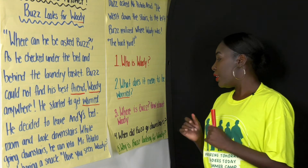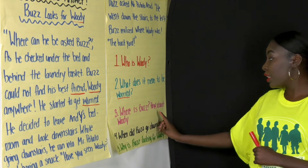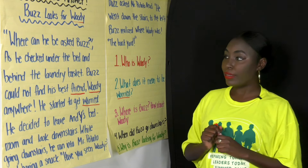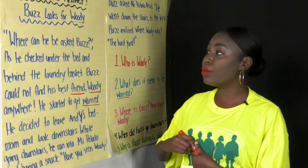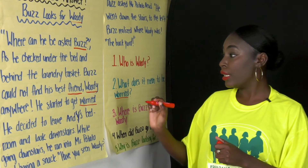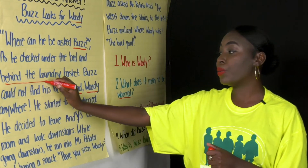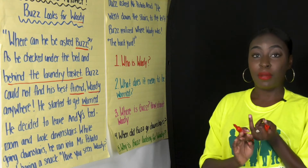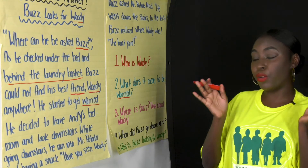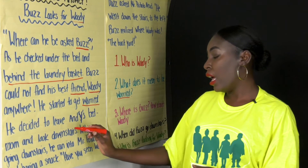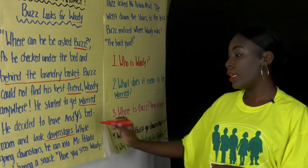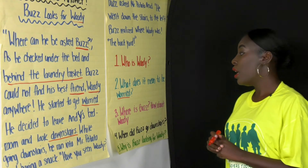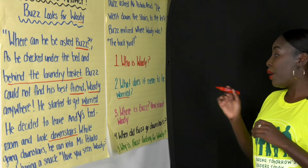Number three: Where is Buzz? That's one part of the question, and there's a second part — how about Woody? Let's go back to our clues. Buzz is looking behind the laundry basket. Where do we usually keep a laundry basket? Maybe in a laundry room or in a bedroom. Later it says he goes downstairs, so we can infer that Buzz is in a bedroom.